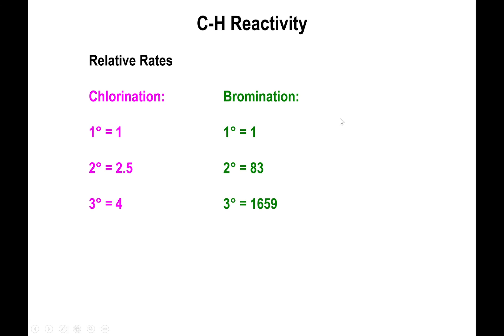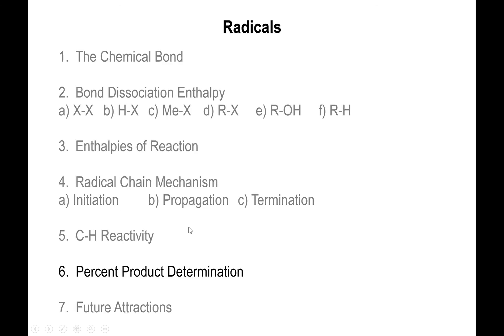Just comparing these numbers, bromination is absolutely very selective, totally favoring tertiary CH bonds, and to a lesser degree secondary CH bonds. Primaries are almost an afterthought with bromination. So brominations are best for tertiaries and to a lesser degree secondaries, whereas with chlorination you get all of them undergoing halogenation. In the next video, I'll walk through the process of predicting the percentages of products for monochlorination and monobromination.